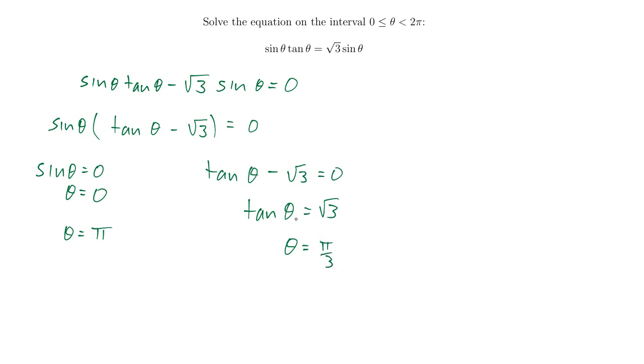And there's another one as well. Tangent is positive in the first and third quadrants, so the one in the third quadrant would be theta equals 4 pi over 3. Okay, so there are my solutions. I have these two here, theta could be 0 or pi, or I could have theta being pi over 3 or 4 pi over 3. Four solutions to this equation.